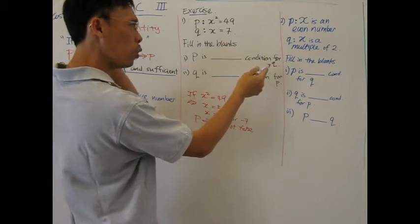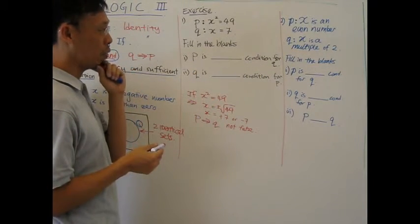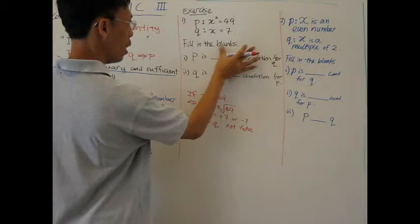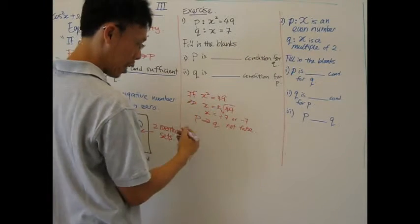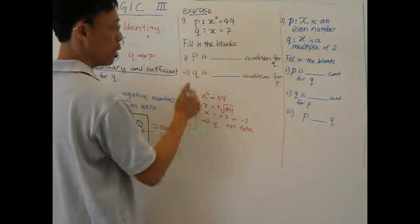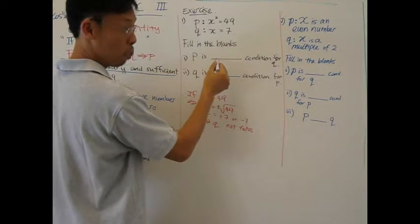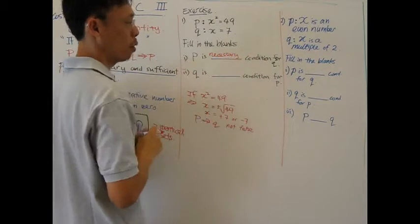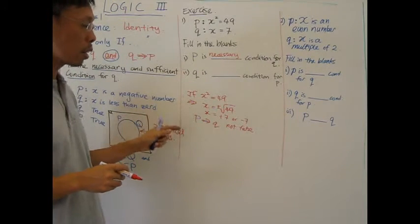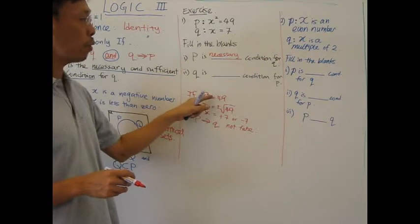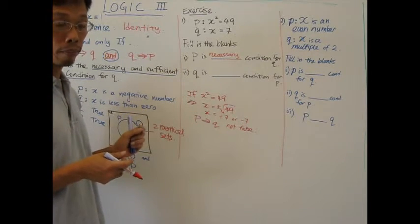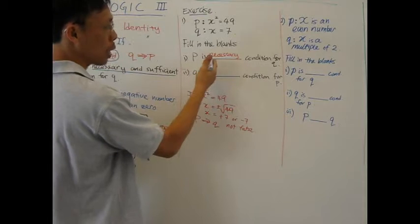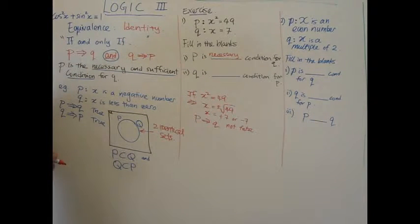So P implies Q is not true. What condition is P of Q? In this case, we can say if it is Q then it's P. This is not going to be a sufficient condition, this is a necessary condition for Q. In order to get the answer 7, it's necessary for x squared to be 49. But it's not a sufficient condition. P in this case is only a necessary condition.